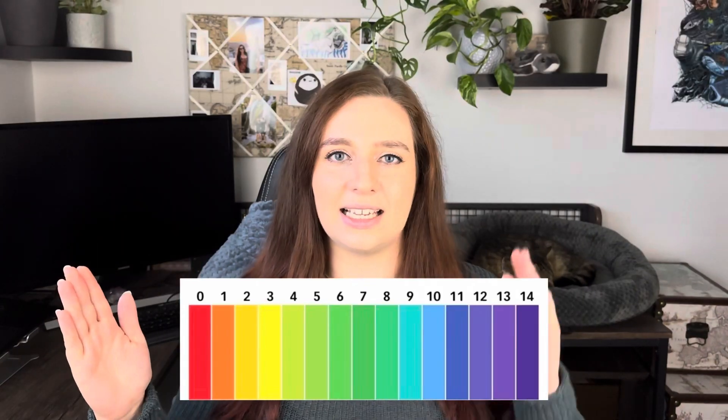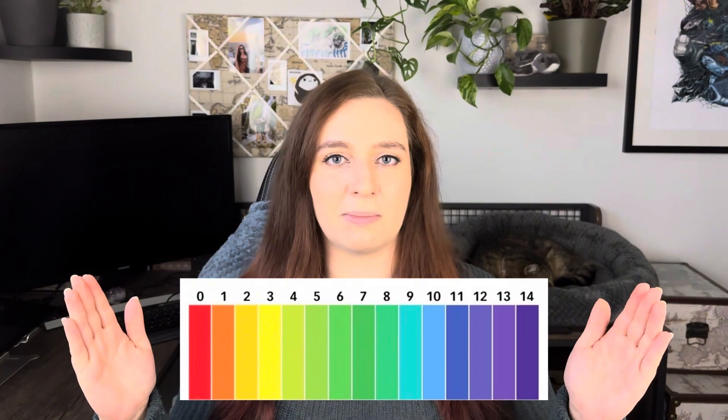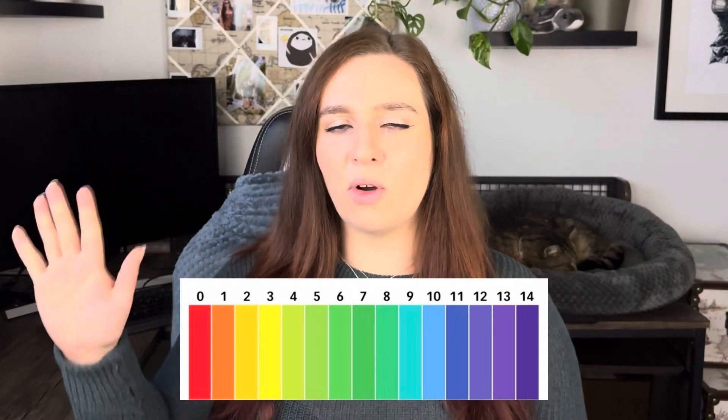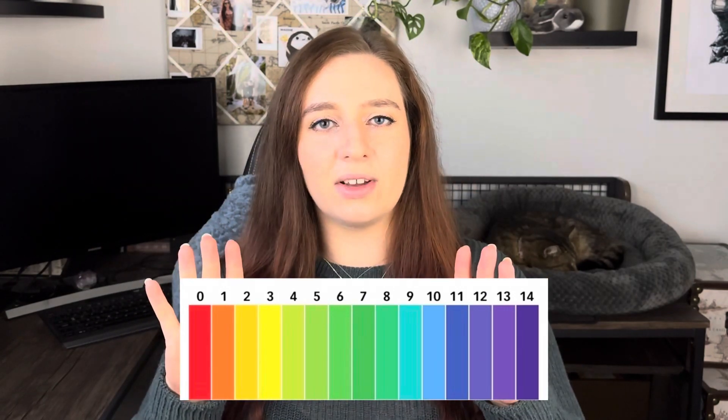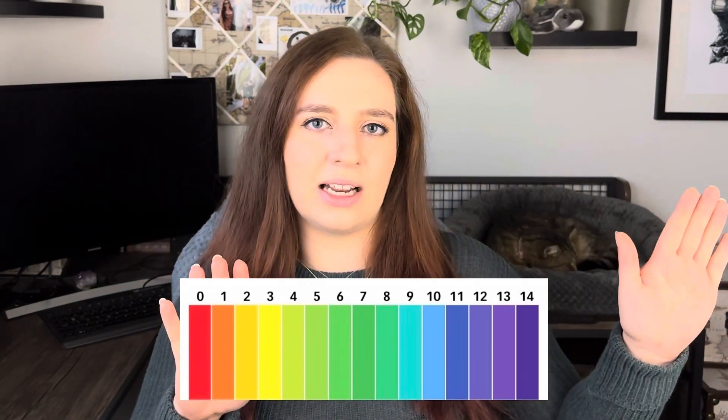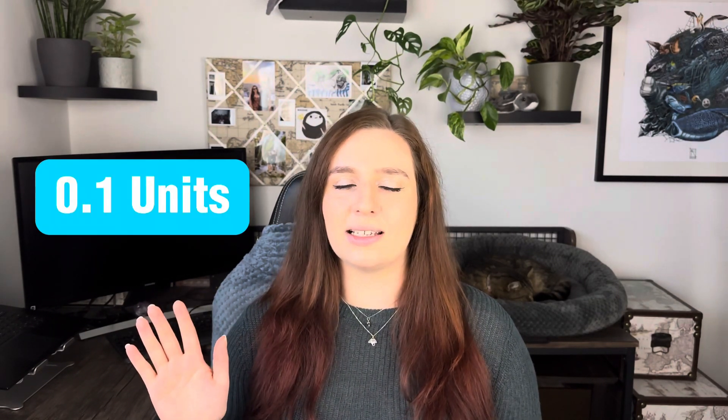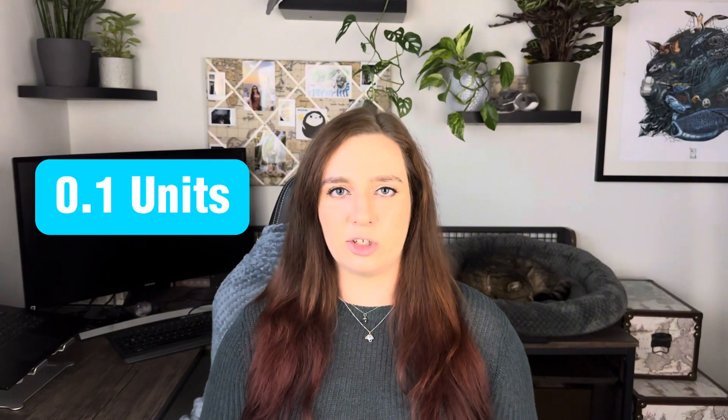If you remember the pH scale from school, you'll recall that the acidity and alkalinity of a solution is measured on the pH scale. The lower values indicate the acidity of a solution. A pH of 7 is neutral and anything above 7 is classed as alkaline. The pH of our oceans has approximately decreased by 0.1 units since the start of the industrial revolution, and this is all due to the increase of CO2 in our atmosphere. While this may not seem like a significant change, it has a very significant impact on our marine life.